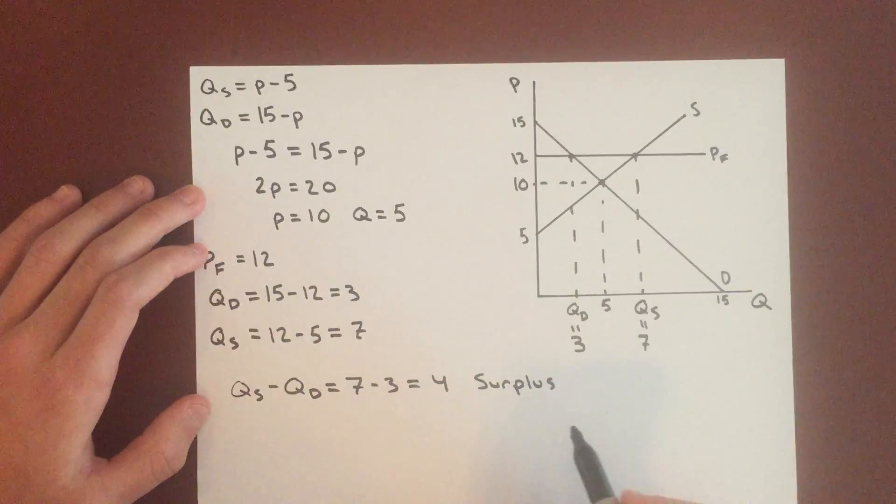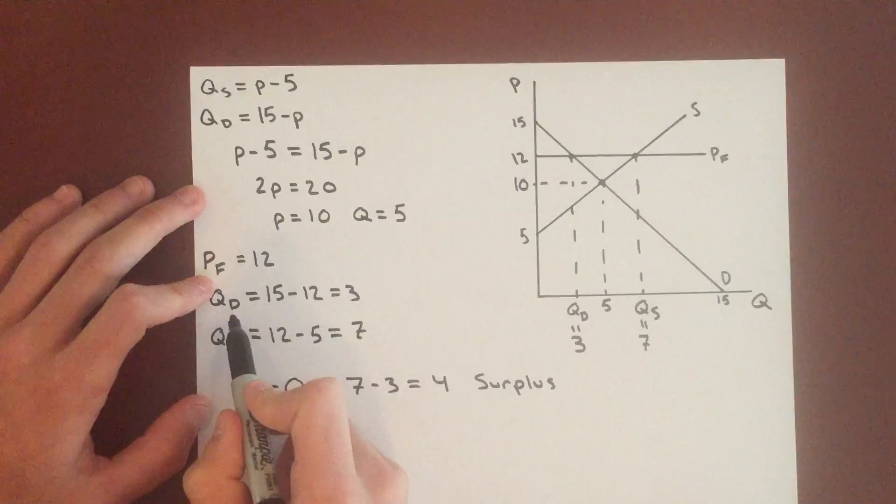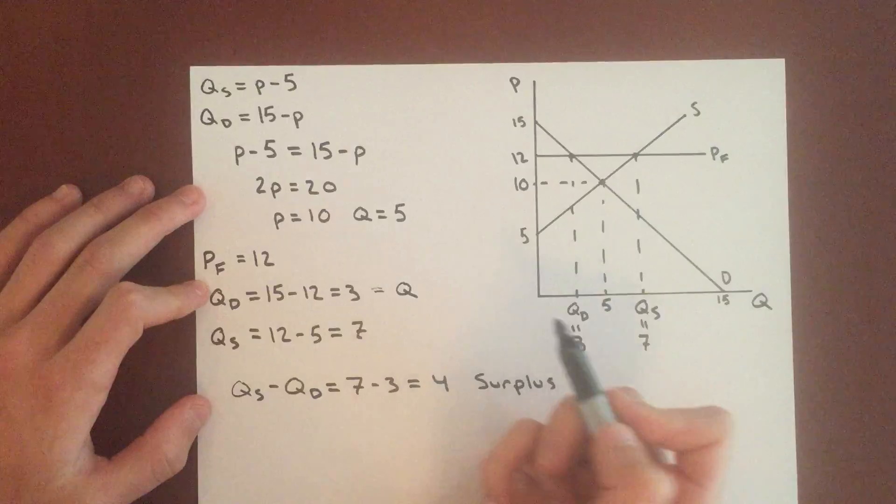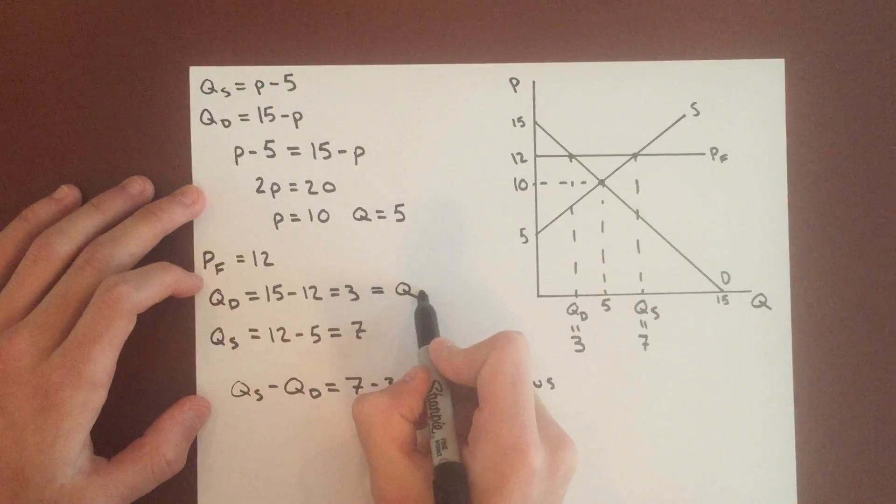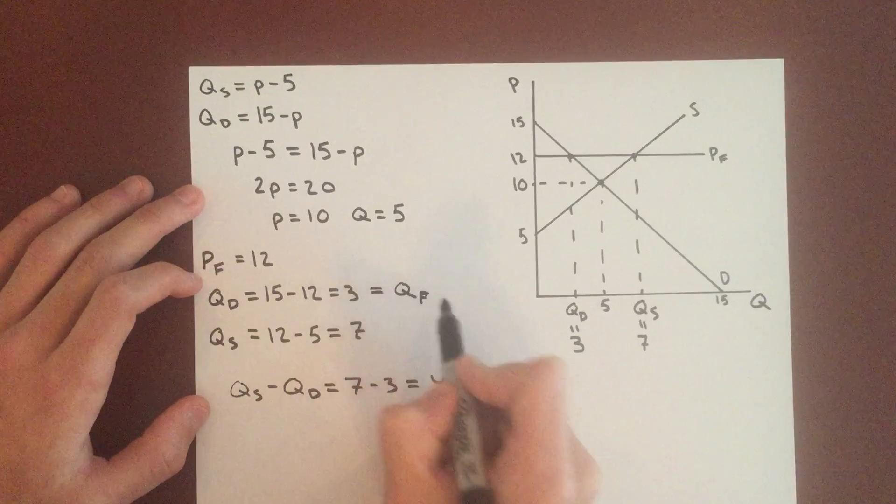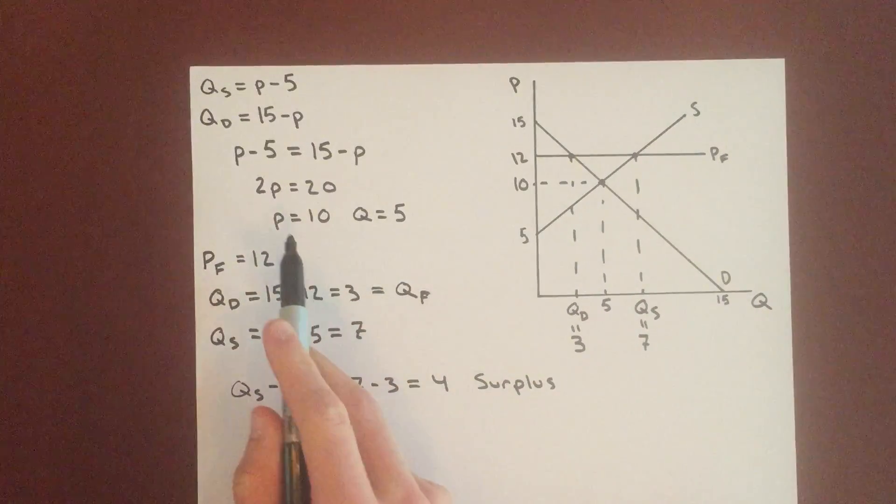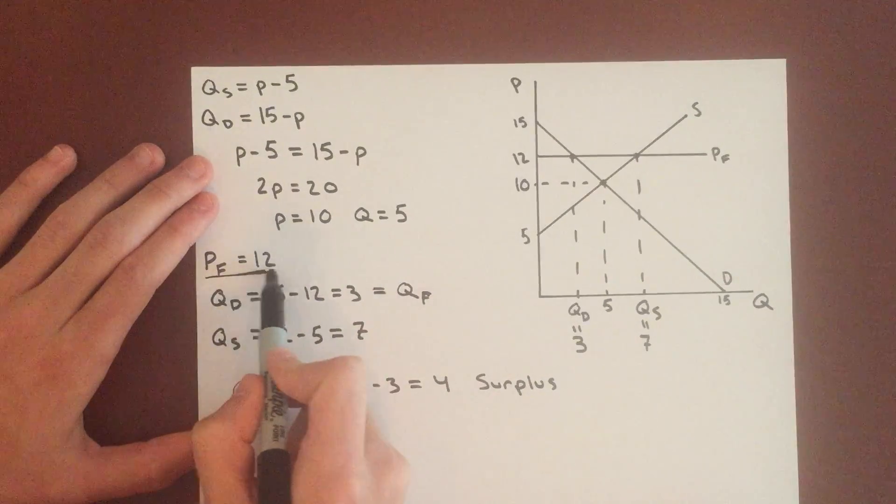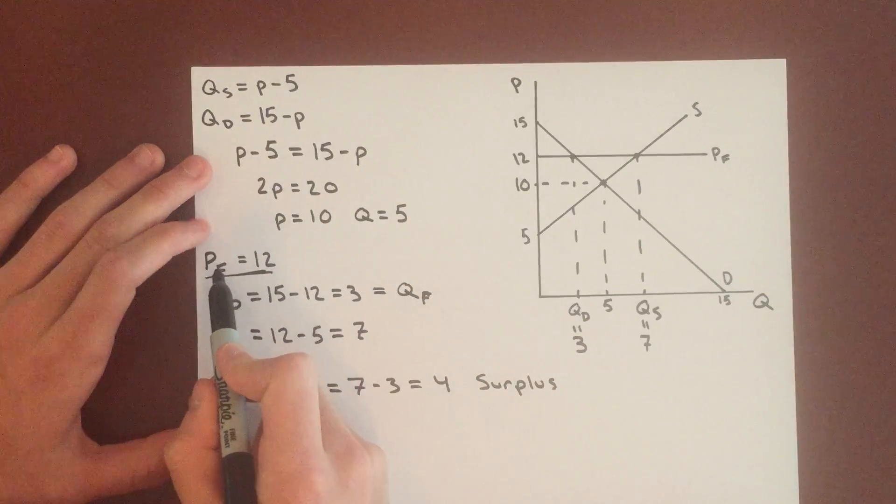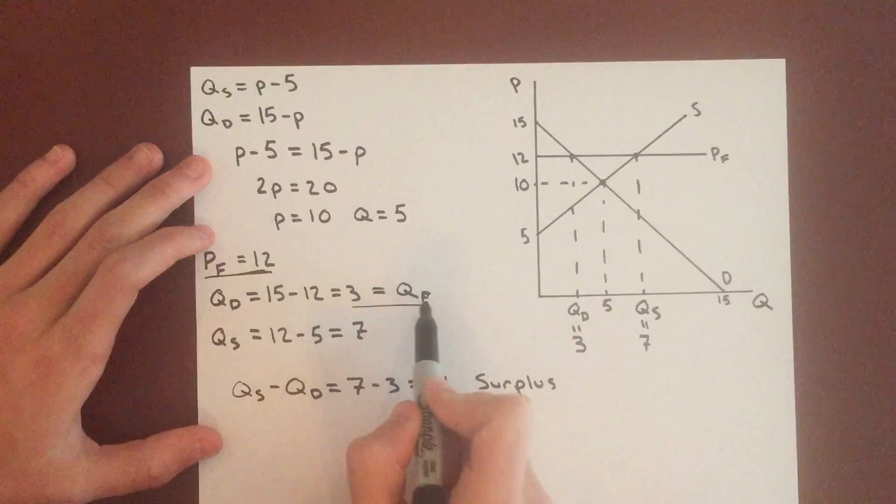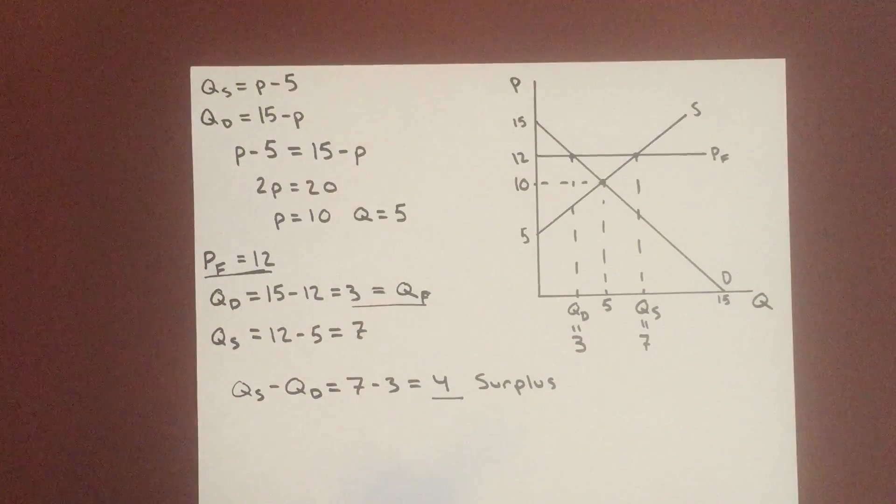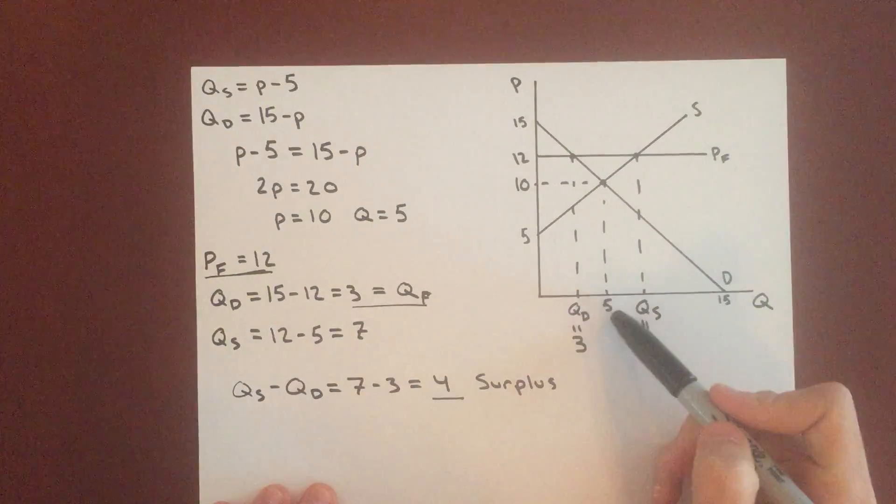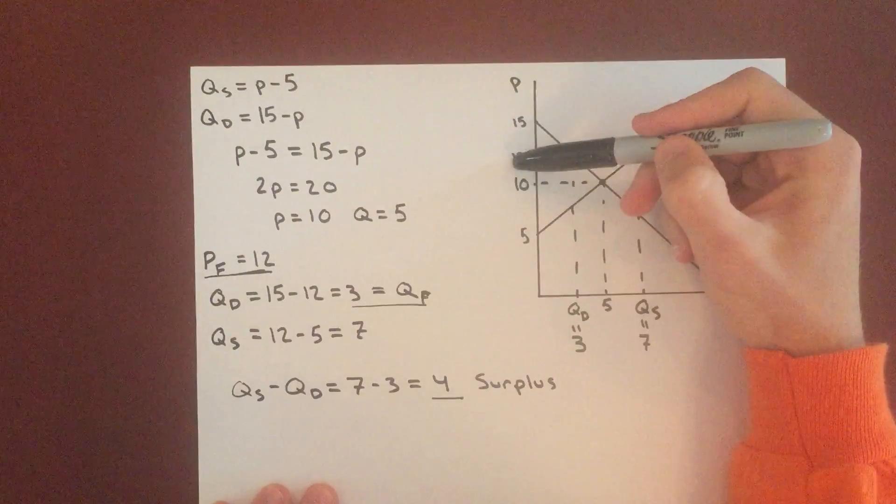Now we have to take, for the quantity, we have to take the lesser number of quantity demanded or supplied. So 3 will actually be the quantity at the price floor. Write an F for quantity at the floor. And the price will be 12. So in our new price floor we have the price equals 12, quantity equals 3, and we have a surplus of 4 units of the goods we're selling. So just comparing this to the original equilibrium, our quantity decreases and our price increases.